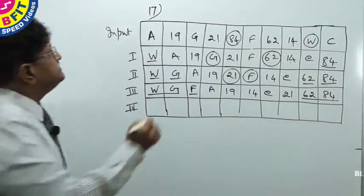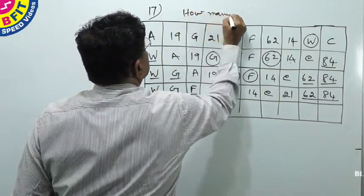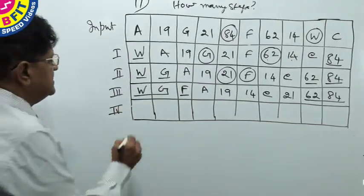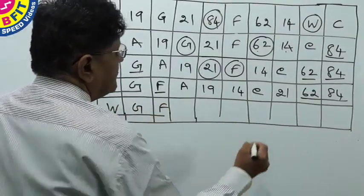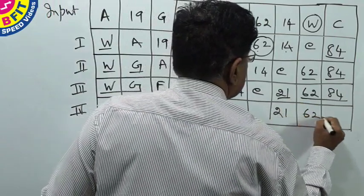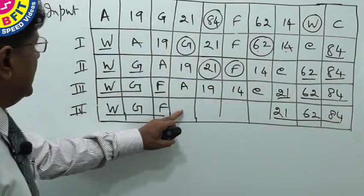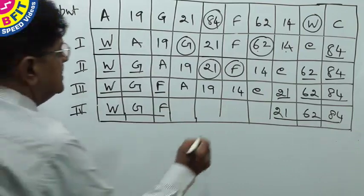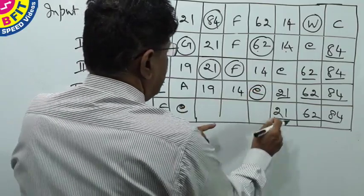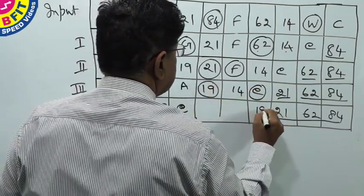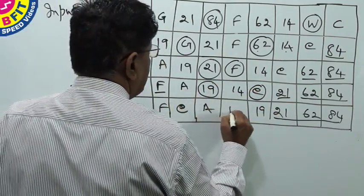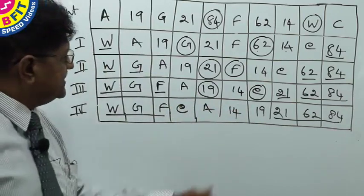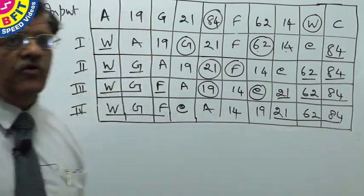How many steps is the question — always be question focused. We have done up to step 3. Now the next step: we will inherit W, G, F. We will inherit 21, 62, 84. What should come here? An alphabet lower than F — it means C. C will come here. And here 19 will come. Then we do shifting — we have only A and 14. With step 4, the alphabets are arranged in descending order: W, G, F, C, A. And the numbers are arranged in ascending order: 14, 19, 21, 62, and 84. Therefore the arrangement is complete.